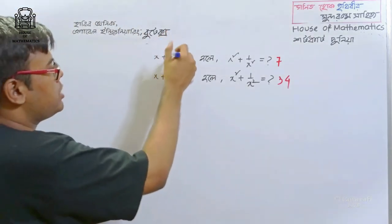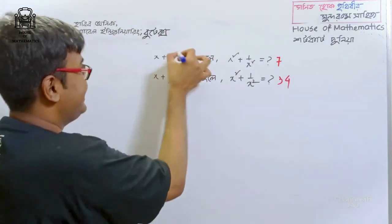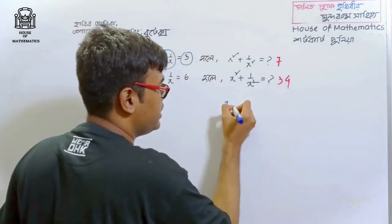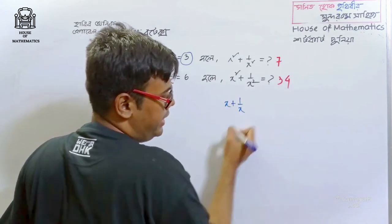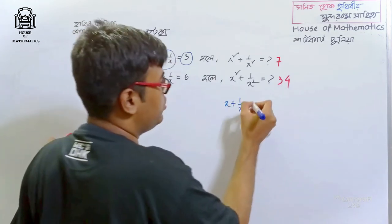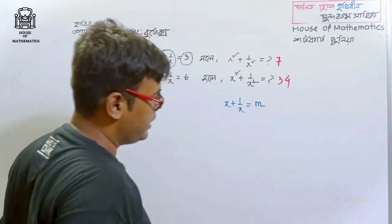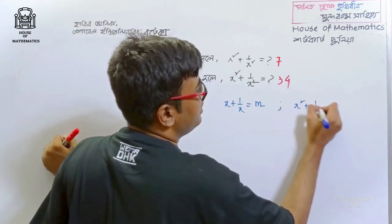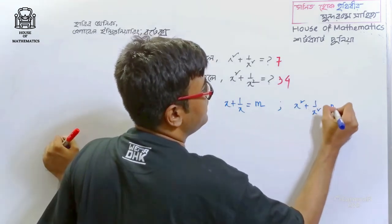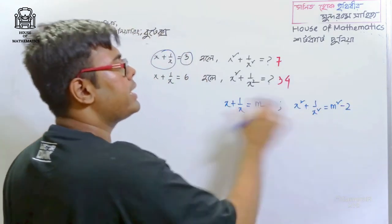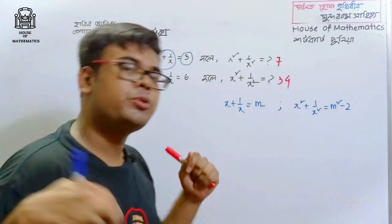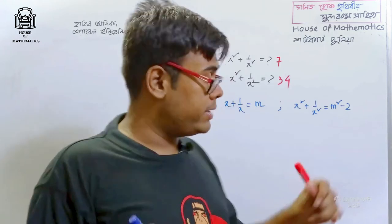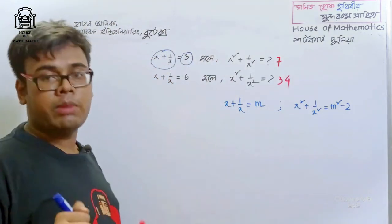This is the most important thing — what we will ask is the same question. The first is the most important thing. The second is x plus 1 by x, which is the most important thing. You can see that the answer is found in the same way.